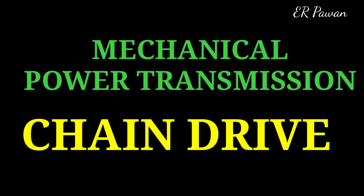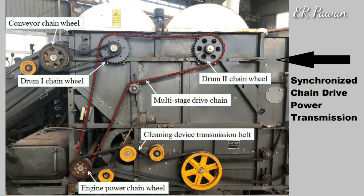A chain drive is a mechanically operating system where we use different types of chains to transmit power or for movement of things. Generally, a chain drive is used where the distance between the power source and where it is to be transferred is less. However, in some cases, we can use a chain drive for longer distances of power transfer.